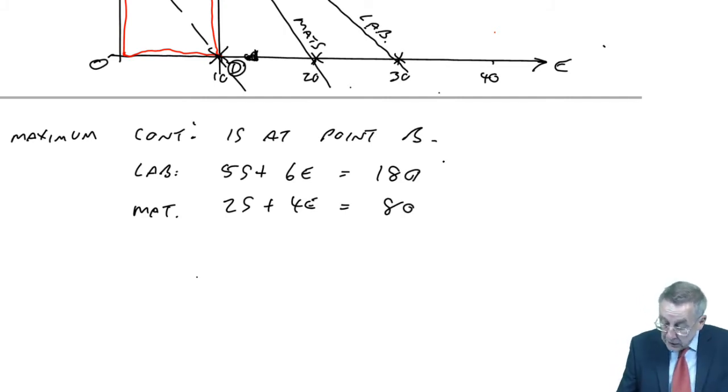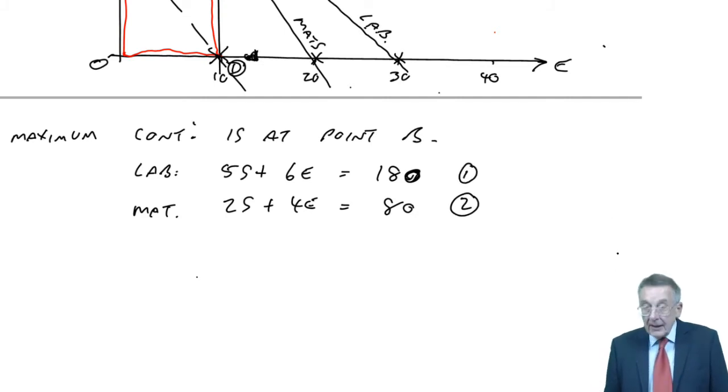Maximum contribution occurs at point B. And as I just said, point B is where the labour line crosses the materials line. So the labour line was 5S plus 6E equals 180. The materials line, 2S plus 4E equals 80. It's where those two lines cross, and so you've got to be able to make sure you're able to solve two lines together.